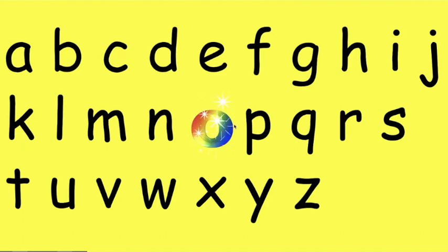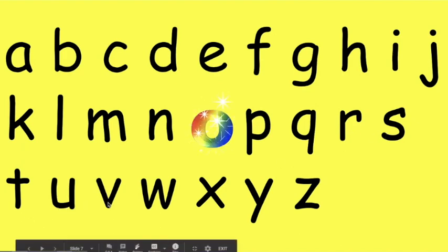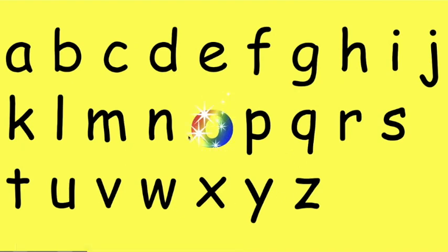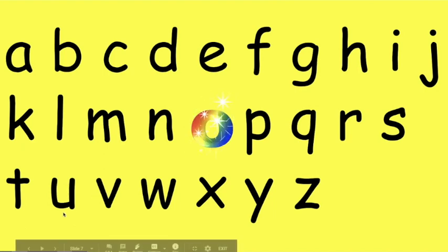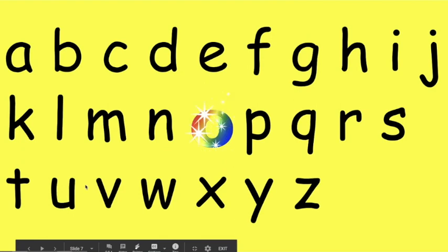Let's finish the rest of the letters and come back to this. P, Q, R, S, T, U, V, W, X, Y, Z. The letter O is a vowel. There are five letters that are vowels and the rest are called consonants. The vowels — we use our mouth a little bit open with these. A, E, I, O, U. These are the vowels.